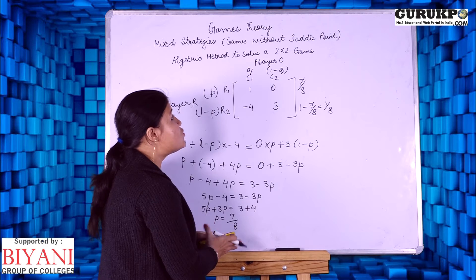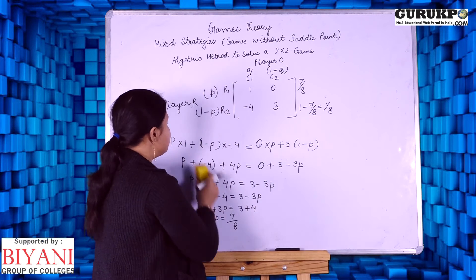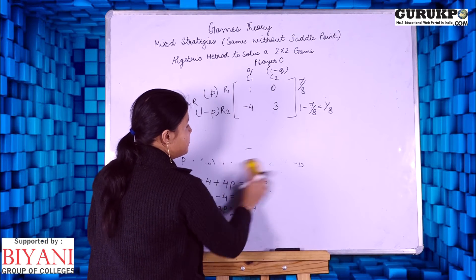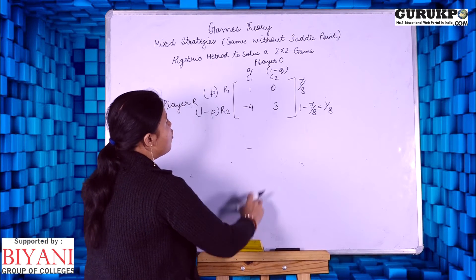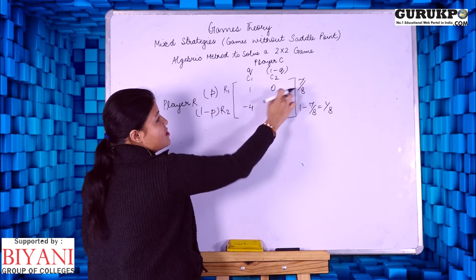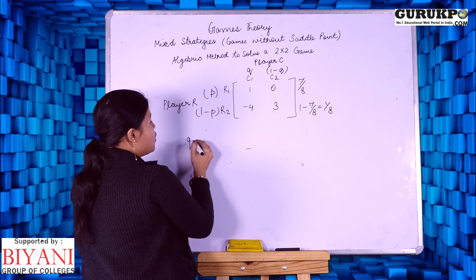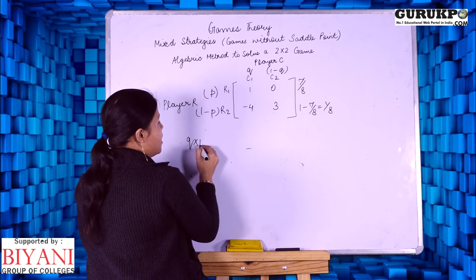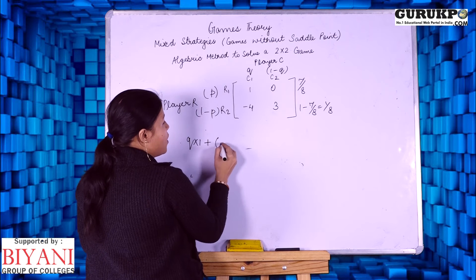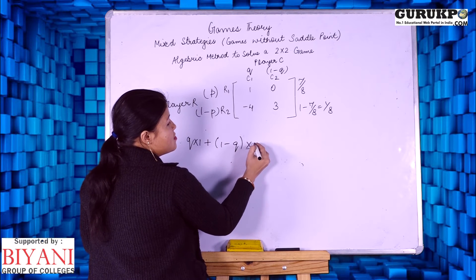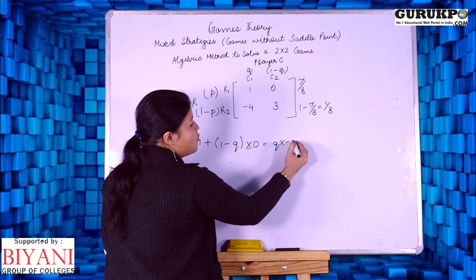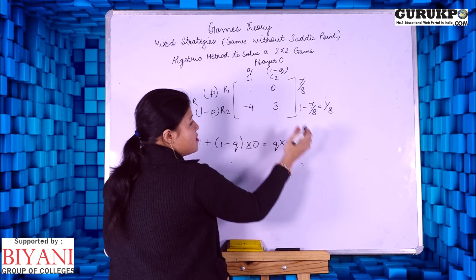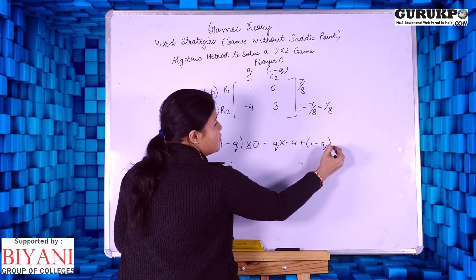In the same way, we are going to find the strategy for column player. Column player strategies are Q into 1 plus 1 minus Q into 0, which equals Q into minus 4 plus 1 minus Q into 3.